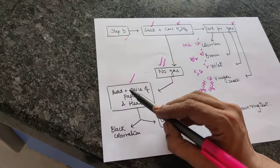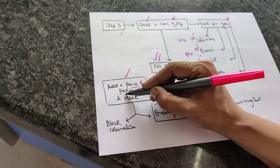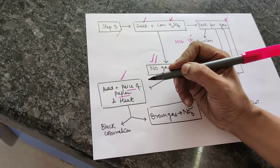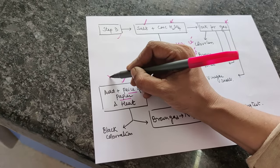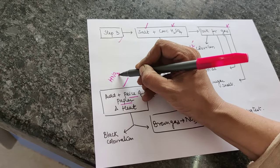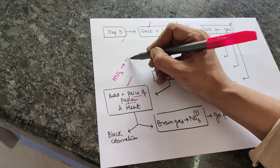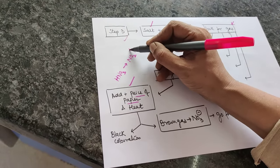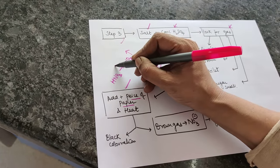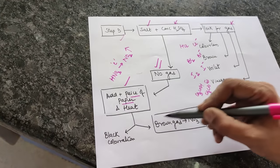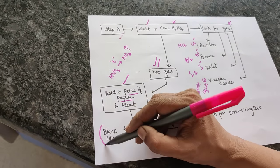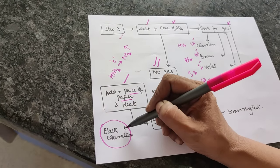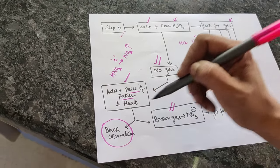If there is no gas with concentrated sulfuric acid, that's also an achievement - these four are absent. If there is no gas, then it is important to add a piece of paper. The piece of paper has carbon which acts as a good reducing agent and converts HNO3 gas, if present in your salt, to nitrogen dioxide gas which is brown in color. If brown gas comes with the piece of paper, it is nitrate. If no gas comes or black coloration happens, it is not nitrate.